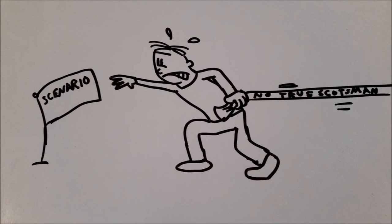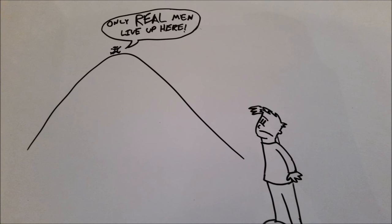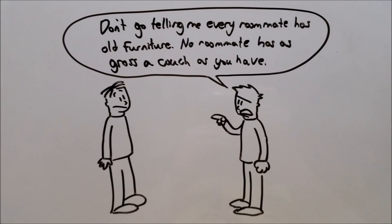This one's a bit of a stretch for our scenario, but usually no true Scotsman is used to disregard a point made by someone, especially when talking about some organized group like a country or religion, because no real supporter of said group would make such an argument. If Alan says, don't go telling me every roommate has old furniture, no roommate has as gross a couch as you have, he's assuming that every other roommate in the world is far cleaner than Bernard, but let's face it, that is absolutely not the case.